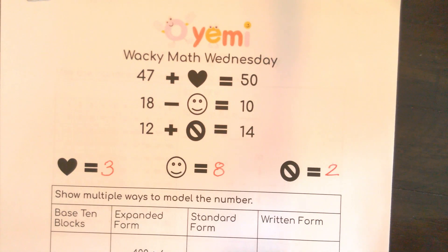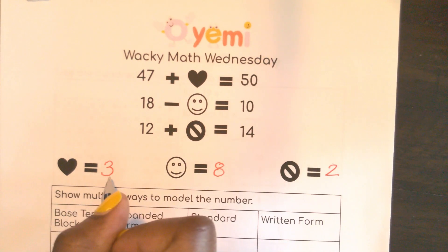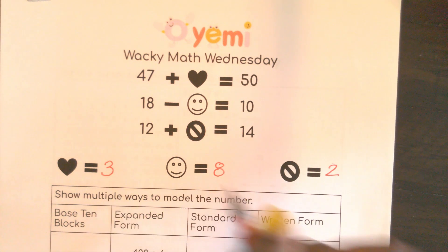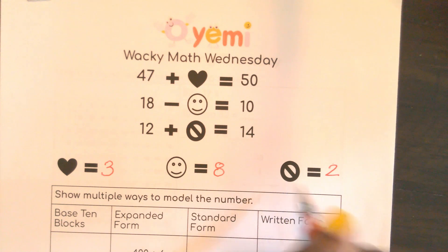Excellent work. So for your heart, you should have gotten three. For your smiley face, you should have gotten eight. And for your no sign, you should have gotten two. Excellent work.